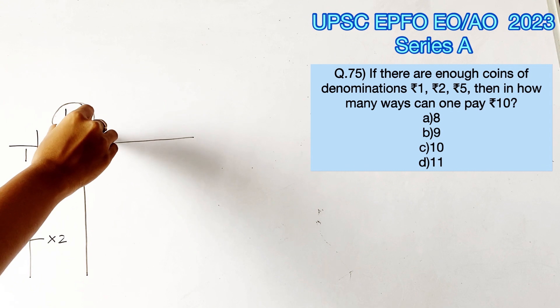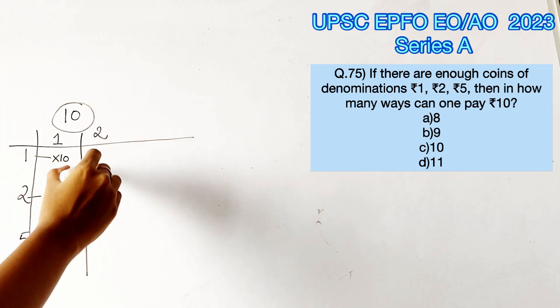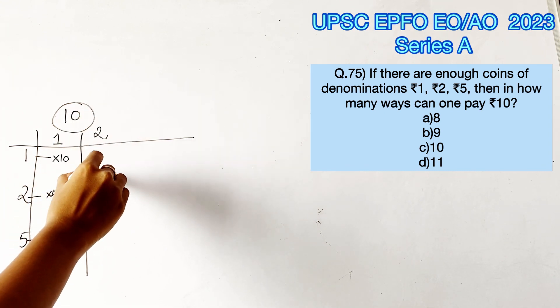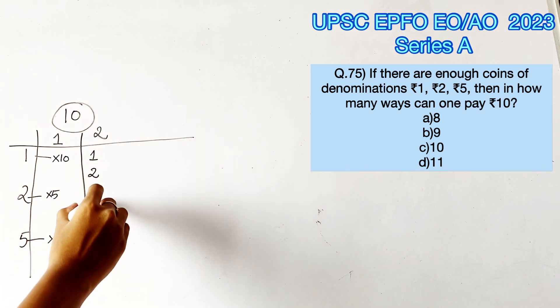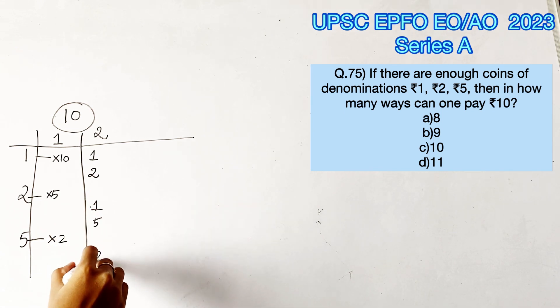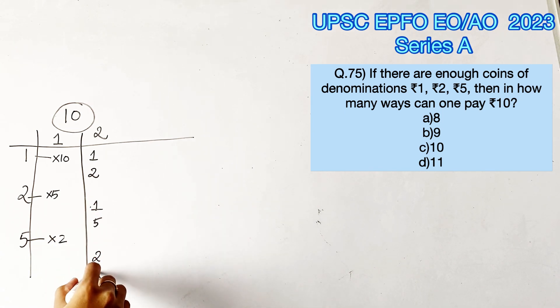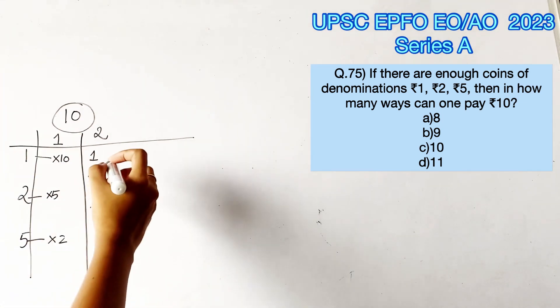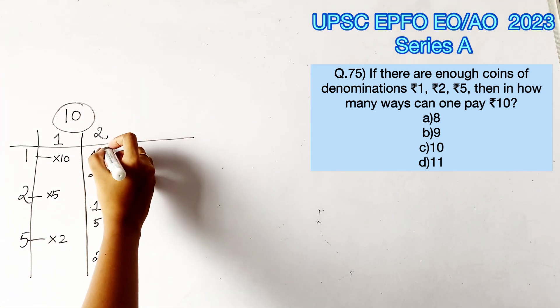Next, let's consider taking two types of coins. The first possibility is taking 1-rupee coins and 2-rupee coins. The second possibility is taking 1-rupee coins and 5-rupee coins. The third possibility is taking 2-rupee coins and 5-rupee coins.